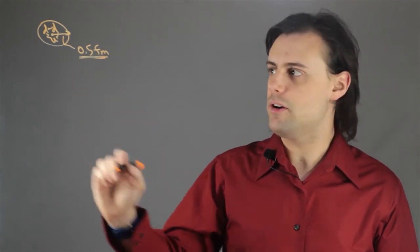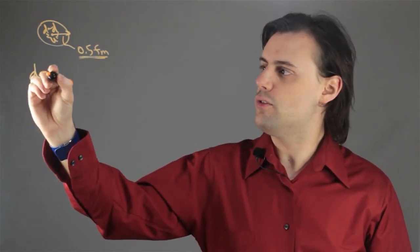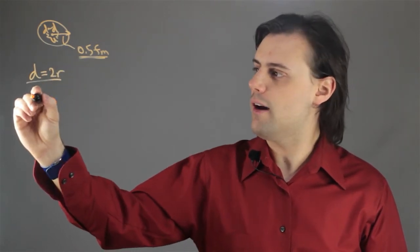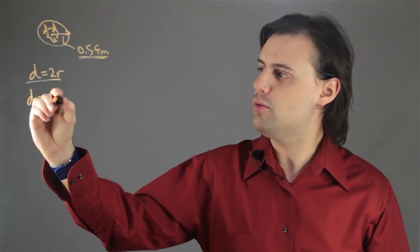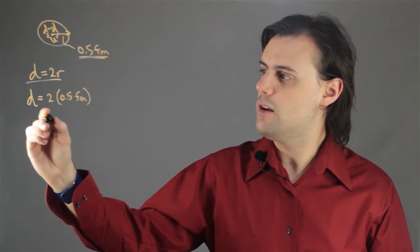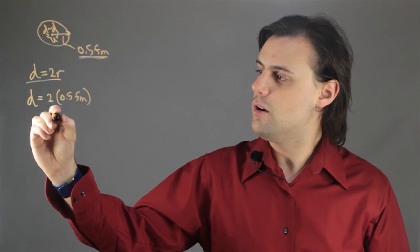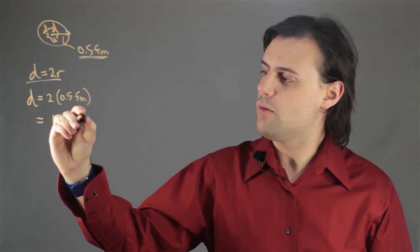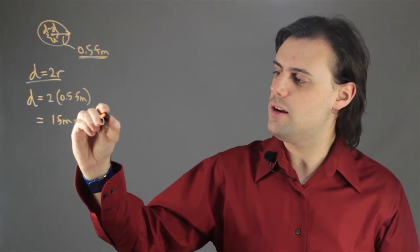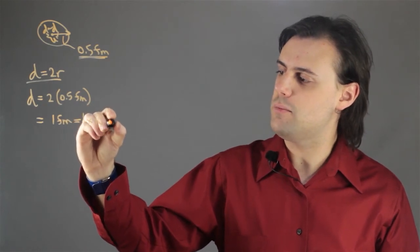And since the diameter is equal to two times the radius for a neutron, we have d is equal to two times 0.5 femtometers, and this is equal to one femtometer, where a femtometer is equal to one times ten to the minus fifteen meters.